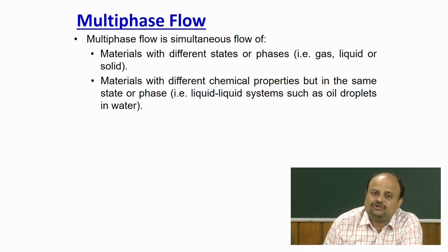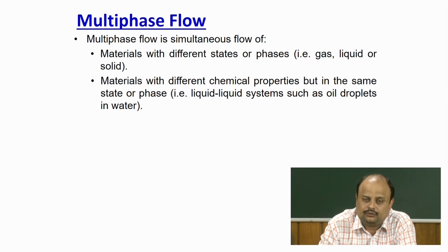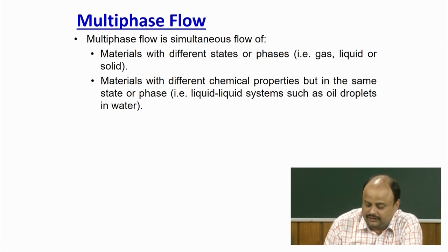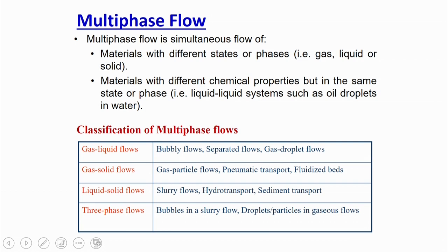That is the formal definition of multiphase flow: either the simultaneous flow of materials in two different states, or materials with different chemical properties. Based on this, multiphase flows are classified into four parts. First is gas-liquid flow — the simultaneous flow of a gas phase and a liquid phase moving together. Typical examples include bubbly flow, separated flow, and gas-droplet flow. Bubbly flow occurs when a liquid is filled inside a tank and air is sparged from the bottom, forming bubbles.